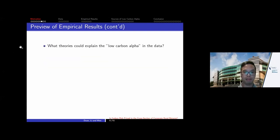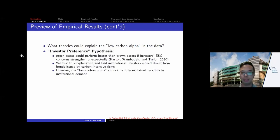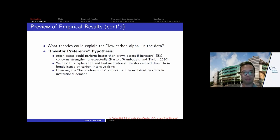Given that the null hypothesis is rejected and we find evidence contrary to the carbon risk premium hypothesis, we ask: what other theories can explain the low carbon alpha? Two recent theoretical studies potentially explain it. The first, by Pastor, Stambaugh, and Taylor, argues that green assets earn lower returns as a hedge against climate change, but also predicts that during the transition when more investors adopt ESG investing, green assets can outperform brown assets due to increased investor demand pushing up green asset prices.